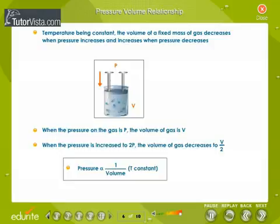Pressure-volume relationship at constant temperature: When you compress a sample of gas using a piston, you increase the pressure and at the same time the volume or space between the piston and the jar is reduced. Therefore, pressure and volume are inversely proportional. When the pressure on the gas is P, the volume of gas is V. When the pressure is increased to 2P, the volume of gas decreases to V/2.